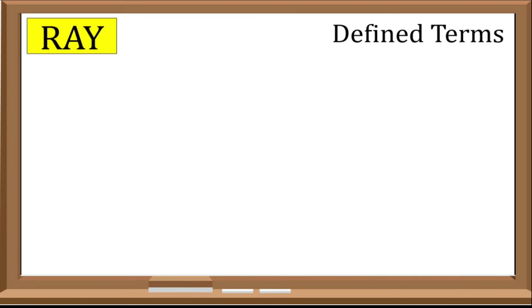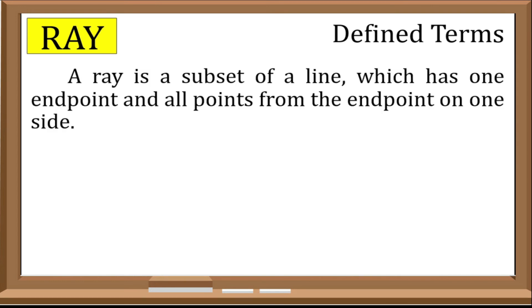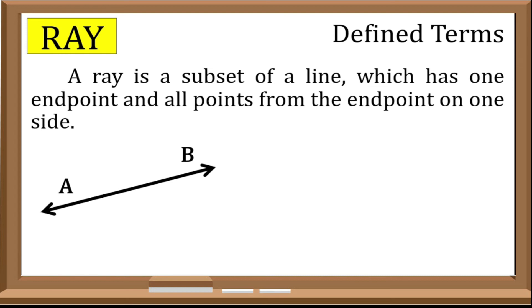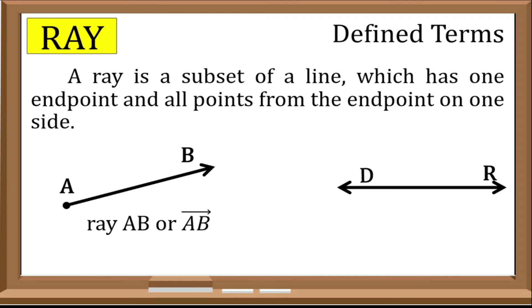Another defined term is a ray. A ray is a subset of a line which has one endpoint and all points from the endpoint on one side. For example, we have line AH — since a ray is a subset or part of a line, we have ray AB. Another example: we have line DR — since a ray is a part of a line, we have ray DR.